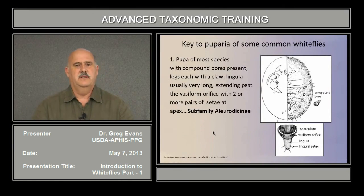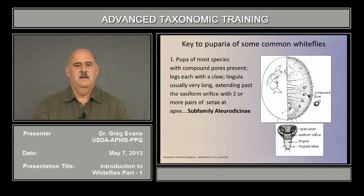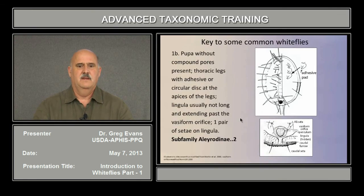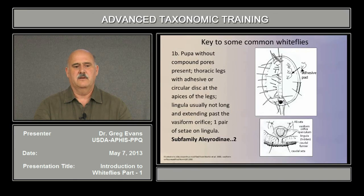Let's go through a short key to the common white flies you may encounter. Pupae of most Aleurodicinae species have compound pores, and their legs have a claw at the end. Their lingula is often very long and extending past the vasiform orifice, and there are two pairs of setae at the end of the lingula. The other subfamily, Aleyrodinae, doesn't have compound pores. The thoracic legs end in adhesive pads rather than a claw, and the lingula only has one pair of setae but is often obscured by the operculum that covers it.